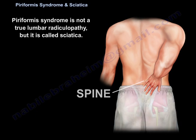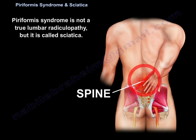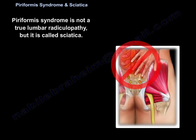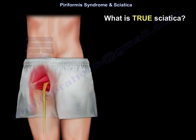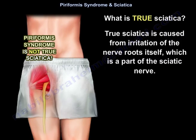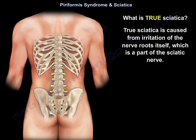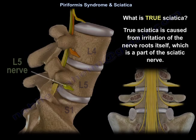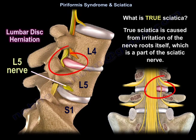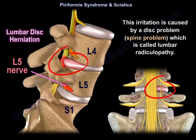Piriformis syndrome is not a true lumbar radiculopathy, but it is called sciatica. True sciatica is caused from irritation of the nerve root itself, which is part of the sciatic nerve. This irritation is caused by a disc problem or a spine problem, and it is called lumbar radiculopathy.